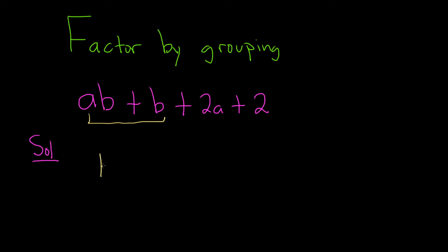So you go ahead and pull out the B — B and then parentheses. You look at AB and say, what's missing? What do you have to multiply by B in order to get AB? Well, you're missing the A. You can check your work: B times A gives you BA, which is the same as AB. And then plus — you're trying to get B, so what do you multiply by B to get B? Just one.